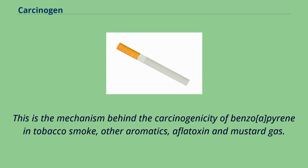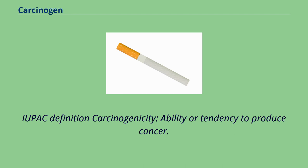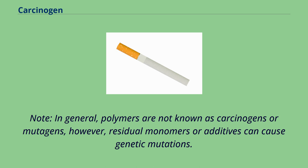The IUPAC definition of carcinogenicity is the ability or tendency to produce cancer. Note that in general, polymers are not known as carcinogens or mutagens; however, residual monomers or additives can cause genetic mutations.